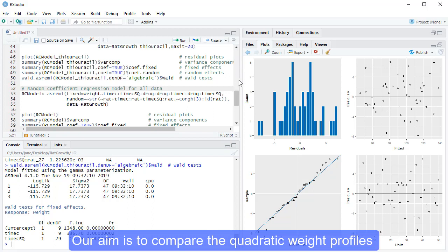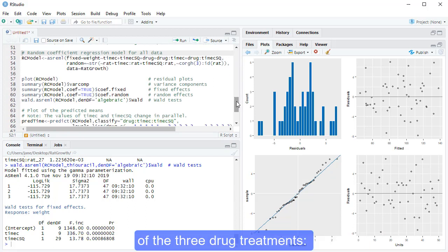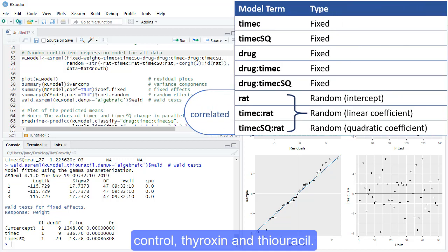Our aim is to compare the quadratic weight profiles of the three drug treatments, control, thyroxin, and thiouracil.